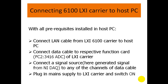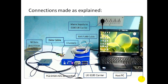Connect a generated signal source from a DAC to any of the channels of that cable. Then plug in the supply to the carrier and switch on the mains. Here is a clear picture of the connections: an NI DAC generates a signal given to any channel of the data cable connected to function card 2. This is the LXI6100 carrier with a LAN cable connected to the PC via RJ45, and the main supply is given.